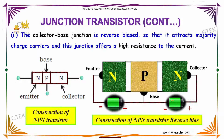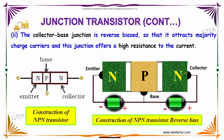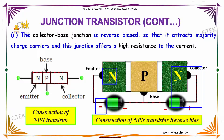The collector-base junction should be reverse biased — positive to negative — so that it attracts the majority of charge carriers, and this junction offers high resistance to the current. Negative to negative will repel, and negative to positive will attract, so the emitter sends carriers and the collector receives them.